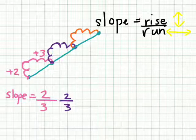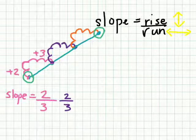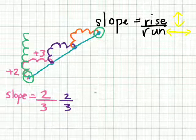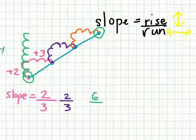But watch what happens if I decide to use this point, the first point and the last point. Let's see how much it rises from the two green points. One, two, three, four, five, six. Rise is six, plus six.